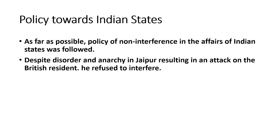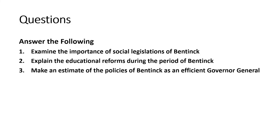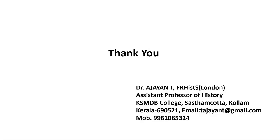As far as Indian states were concerned, Bentinck adopted a policy of non-interference. Even when the resident in Jaipur was attacked, William Bentinck did not interfere. However, a different policy was adopted towards Mysore, which was amalgamated with the British Empire in 1831. Coorg was annexed with the British Empire in 1834, as was Central Cachar in 1834. He also concluded separate treaties with the Punjab ruler Ranjit Singh as well as the Amir of Sindh, in the backdrop of Russian advance. Thank you, students, for watching this class.